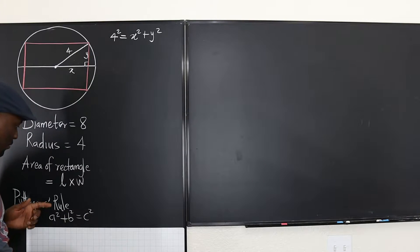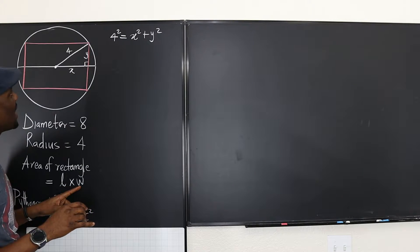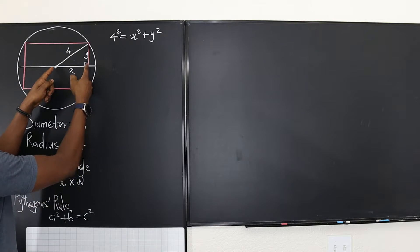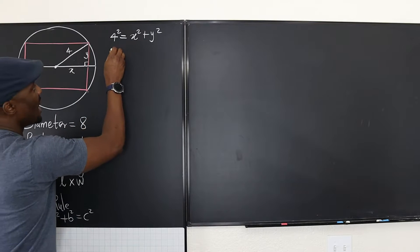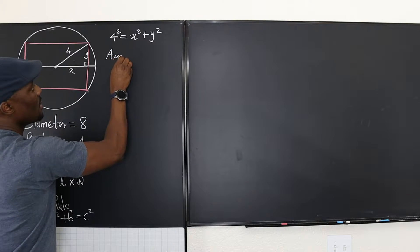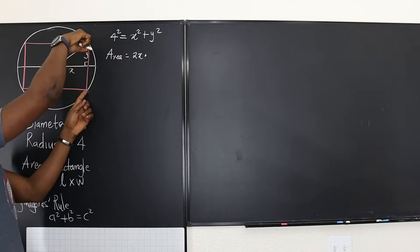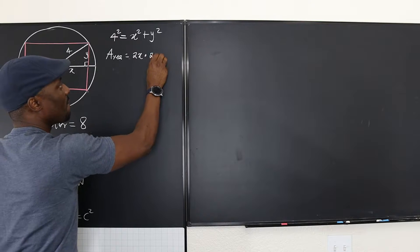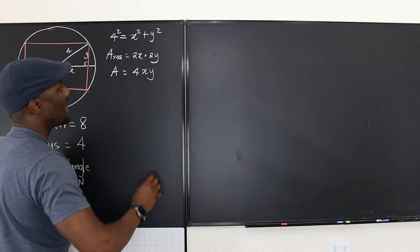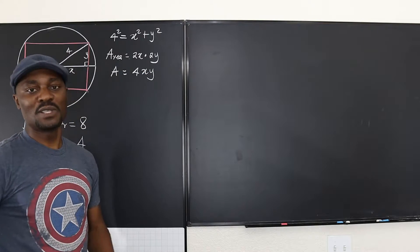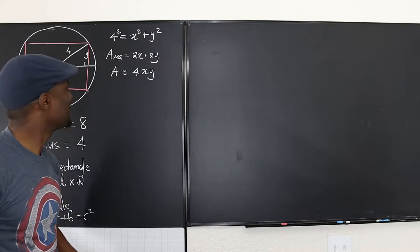So one thing we know if we borrow Pythagoras' rule is that four squared will be equal to X squared plus Y squared. That's certain. We know that. What's the area of a rectangle? It's the length of the rectangle times the width of the rectangle. What's the length of the rectangle? It's from here to here, which is twice X. If you double it, that would be this. So we have the area will be equal to 2X multiplied by 2Y. So our A is going to be 4XY. So now we have two equations we can use to solve this problem.